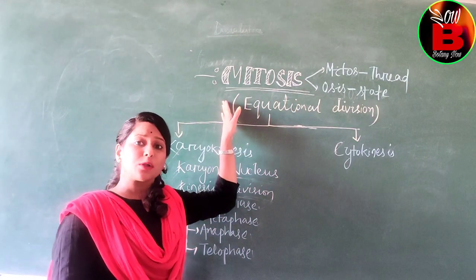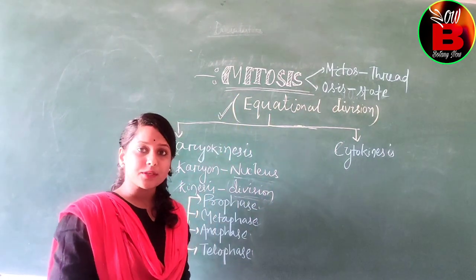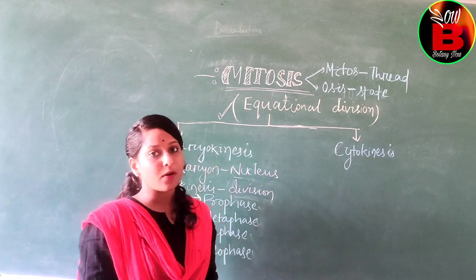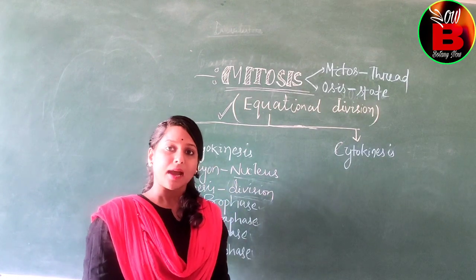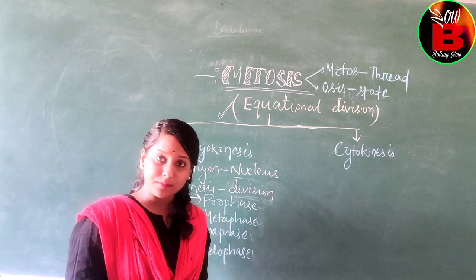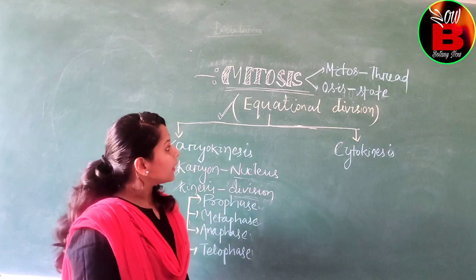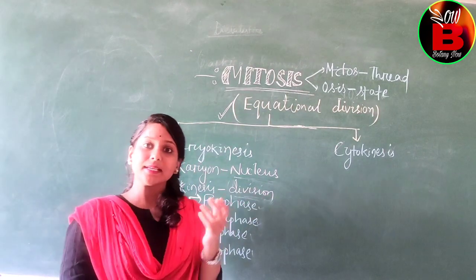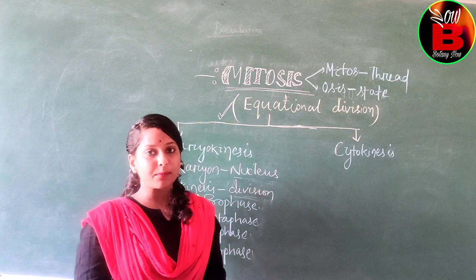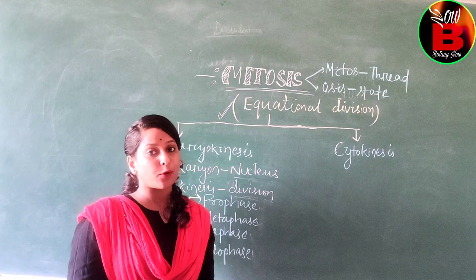Mitosis is also known as equational division. Because in this process, two daughter cells are formed from the parent cell, and the chromosome number of the parent cell is similar to that of the daughter cell. That is, if the parent cell is haploid, then the daughter cell is also haploid. If the parent cell is diploid, then the daughter cell is also diploid.